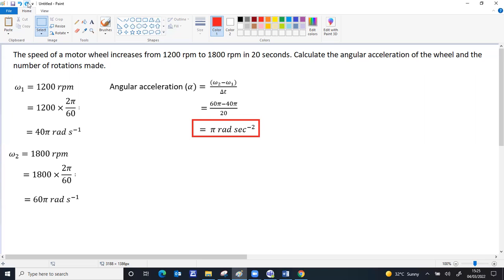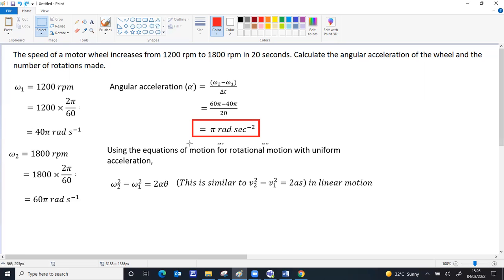So for finding the total angle rotated, like total displacement in linear motion, we have a relation in rotational motion. ω₂² minus ω₁² is equal to 2αθ. This is similar to v₂² minus v₁² equal to 2as. That's for linear motion. Here, linear acceleration is angular acceleration, linear displacement is angular displacement, linear velocities correspond to angular velocities.